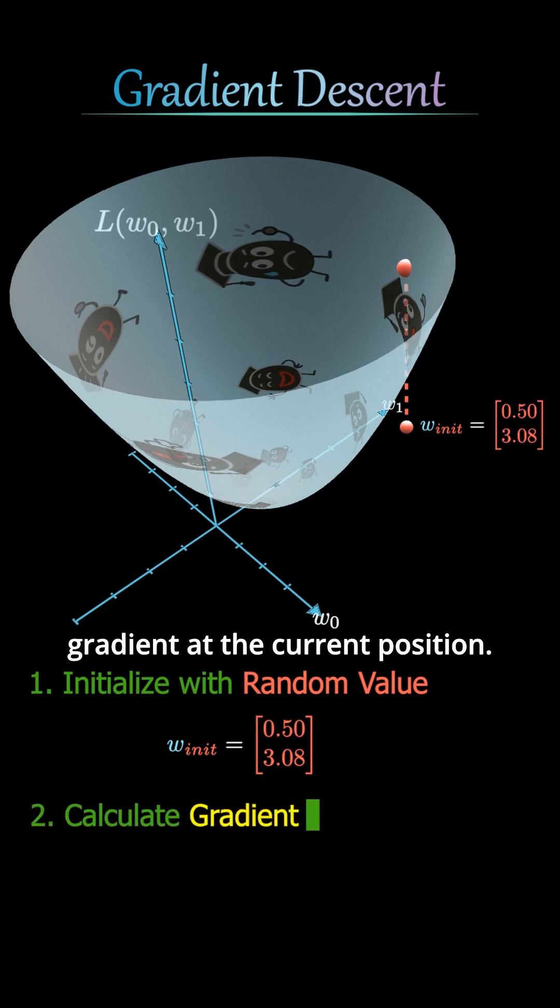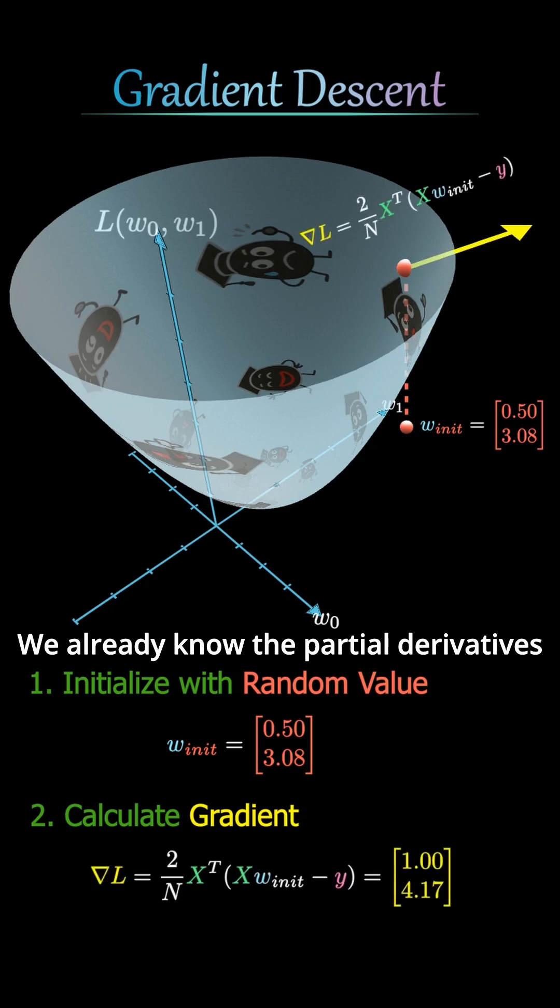Second, we compute the gradient at the current position. How do we do that? We already know the partial derivatives of the loss function, and since we know the current w and x and y come from the data, we can compute the gradient directly.